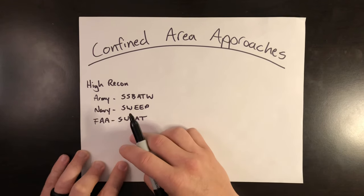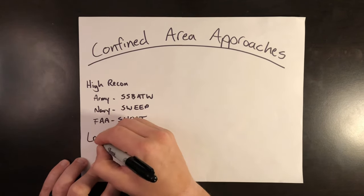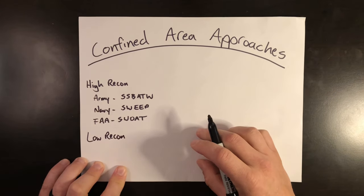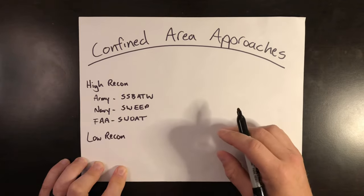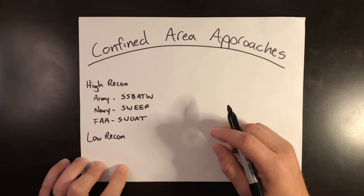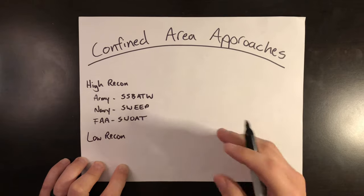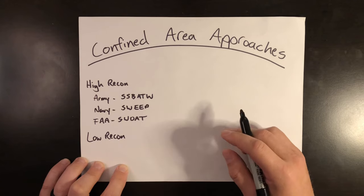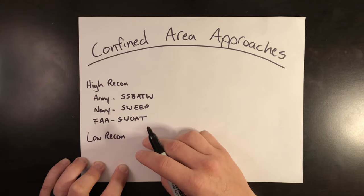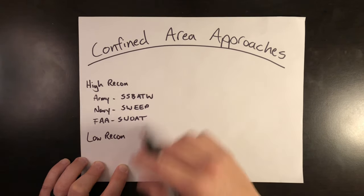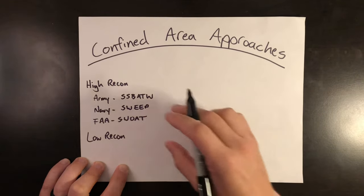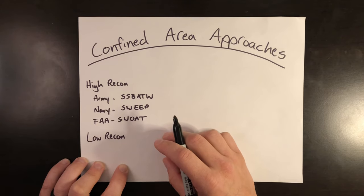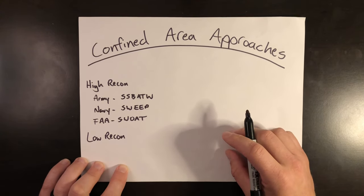Following the high area recon analysis, move over to a low recon. This low recon is going to be on the approach path to a decision point — you get to a point where you're either going to commit to a go-around, and this should be prior to ETL (effective translational lift), or you continue the approach. Are the factors you considered in the high area recon true all the way through? Or did something change between the high area recon and the low area recon? If so, consider a possible go-around if it jeopardizes the approach.